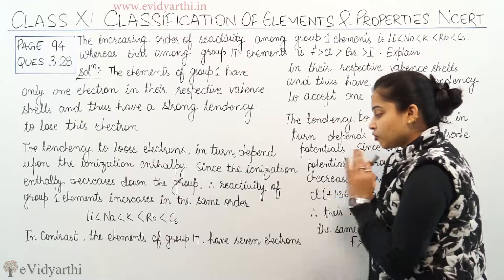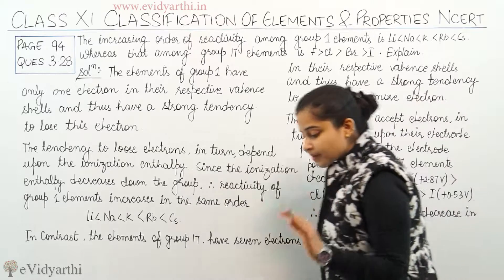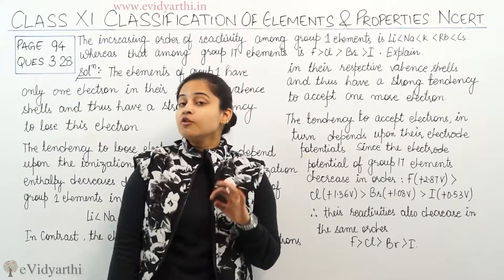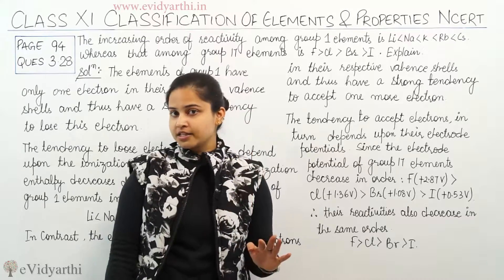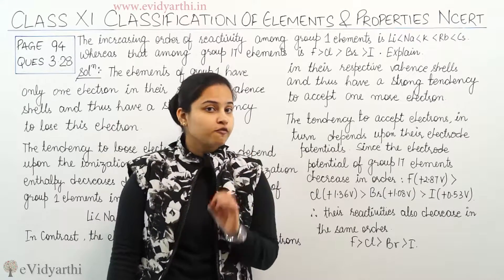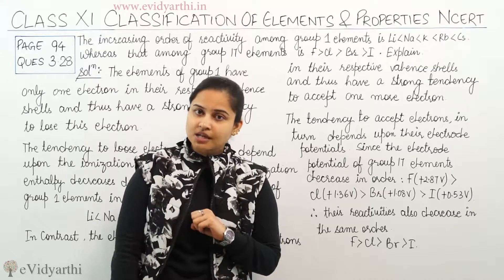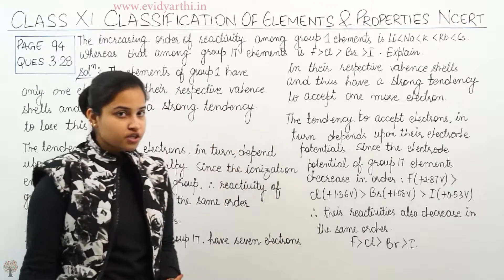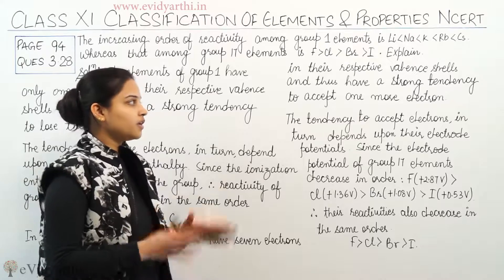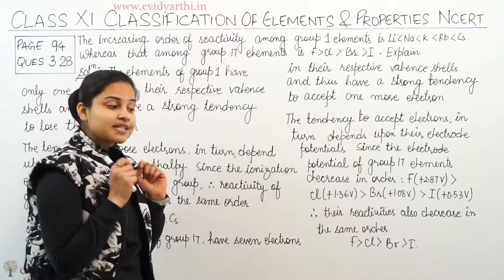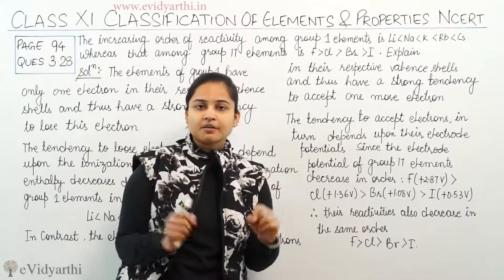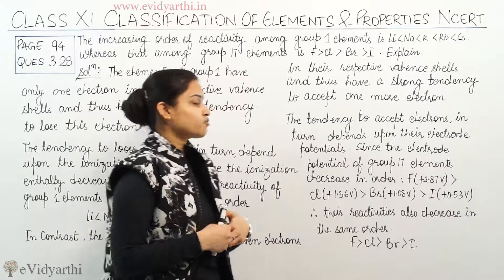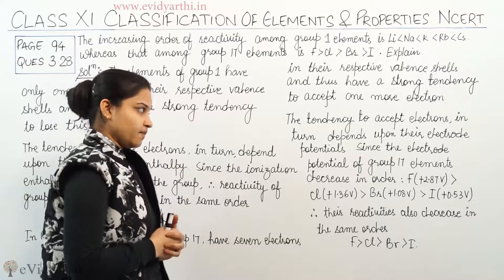In contrast, the elements of Group 17 have 7 valence electrons in their outermost valence shell. That means they are short of one more electron to attain the stable noble gas configuration. Therefore, Group 17 elements have a strong tendency to accept one extra electron.